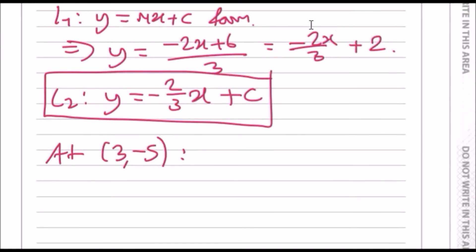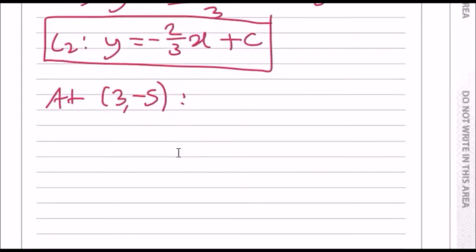The equation will now become, you just substitute x is 3 and y is minus 5, you get minus 5 equals minus 2 over 3 times 3 plus c. Then solve for c, just put this in a calculator and move it to the other side. You should get c equals negative 3.